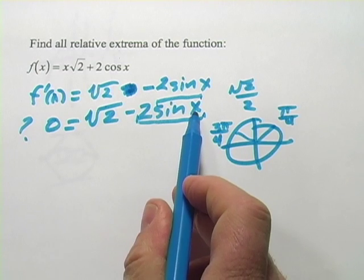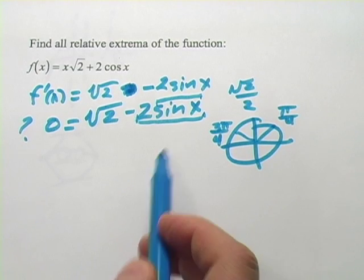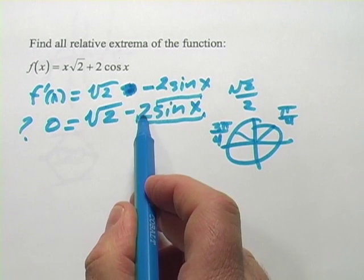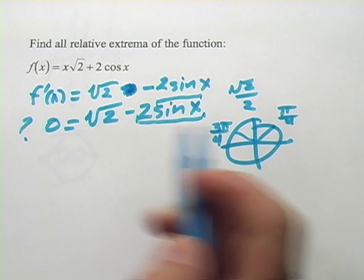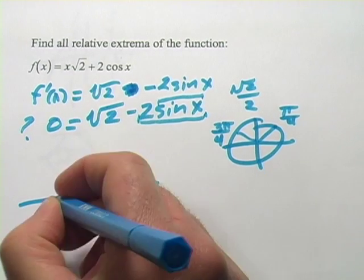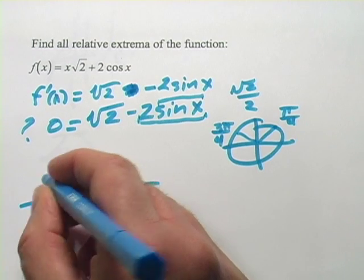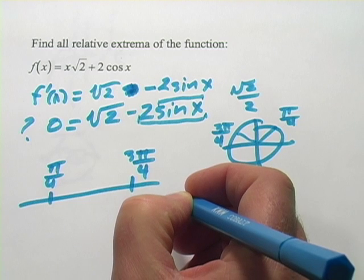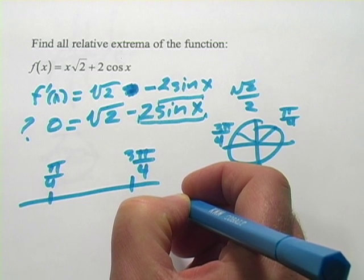So those, you can try plugging them in there and see if this equals 0. It does. This equates both of them to the square root of 2 over 2. We multiply by 2, then you have the square root of 2 minus the square root of 2. That equals 0. So those are our two points. And so on our number line, we have pi over 4 and 3 pi over 4. And we want to test these regions.